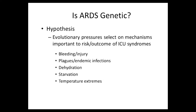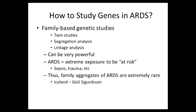How do you study this? The classic powerful approach is family-based studies. The problem with ARDS is that you need an extreme exposure to be at risk, and absent bus accidents at family reunions, you don't have family aggregates with similar insults — so it's very difficult, leaving us with cohort studies. One slight exception: we've been working with colleagues in Iceland where there does appear to be some heritability, but the numbers are very small, so stay tuned.